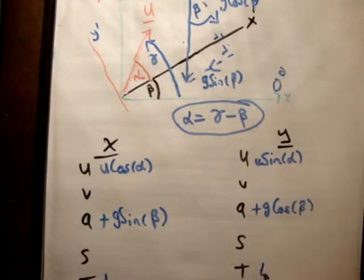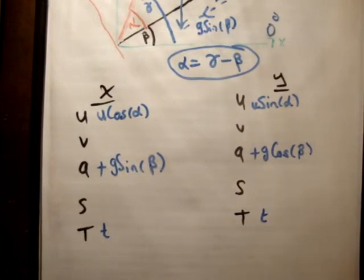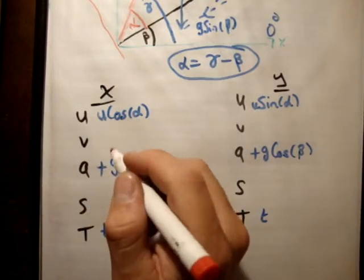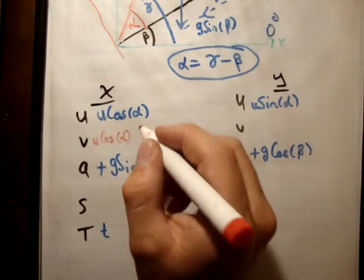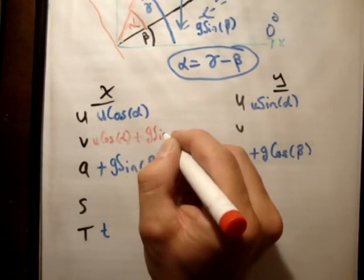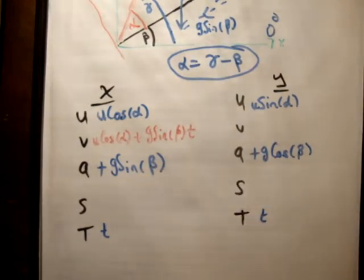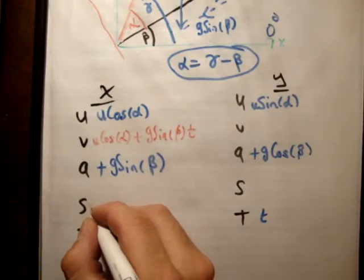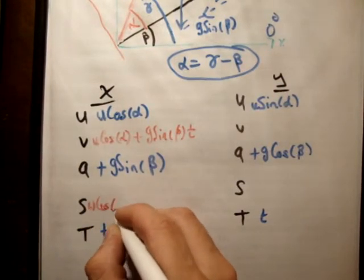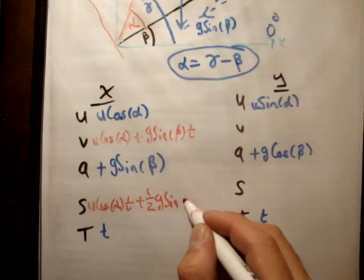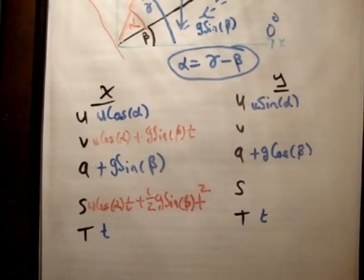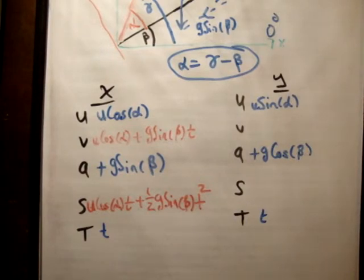This is something we have done plenty times at this stage. So the time, of course, for both is the same. What else are we asked to find? We're asked to find v sub x, v is equal to u plus a t. So I'm going to get out my red marker. V is equal to u, which is u cos alpha plus a t plus g sin beta t. This is ut plus a half a t squared. Like so.